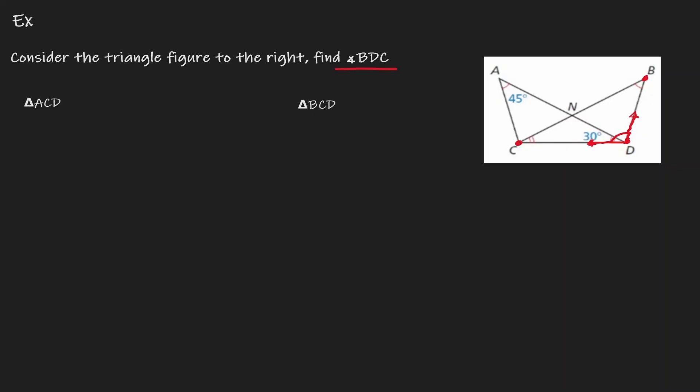Well, if I take a step back, I can see that this triangle is made out of two individual triangles — two triangles are overlapping to create this figure. So let me separate those triangles and look at them individually. The first triangle I notice is triangle ACD. So let me draw that triangle separately: here's A, here's C, and here's D.